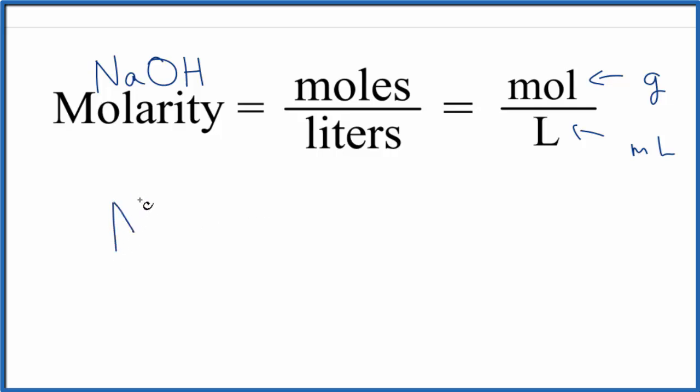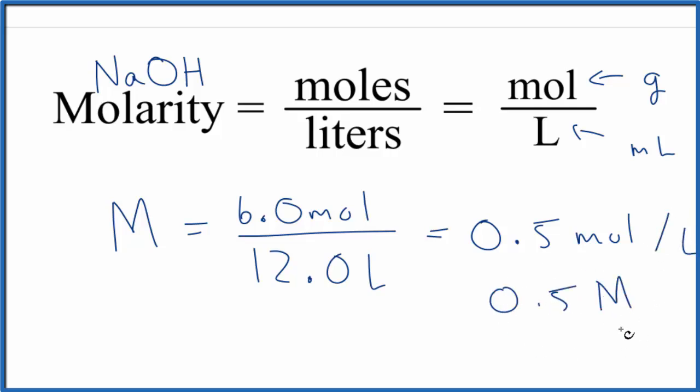If we're given something simple, say 6.0 moles of sodium hydroxide in 12.0 liters, in this case we just divide 6 by 12. That gives us 0.5 moles per liter, which would be 0.5 M for molar. So if you're given moles and liters, you just divide.